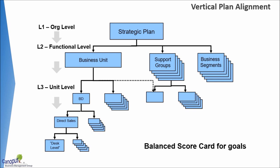In Hoshin Kanri, that is facilitated right from the design stage — that is from the creation of the X matrix itself. If you look at this illustration, vertical alignment of goals starting from level one, that is from the organization level to the functional to the unit level, percolates exactly in the way it happens in the Balanced Scorecard.